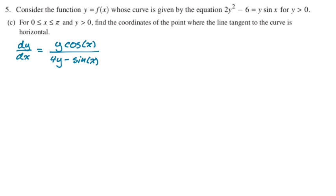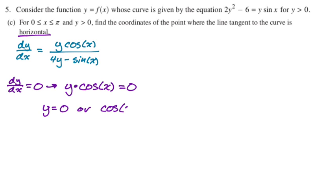For 0 to pi, inclusive, and y greater than 0, find the coordinates of the point where the line tangent to the curve is horizontal. This has historically been on the test many times. If you go back in the archives, you will find a lot of them like this. Horizontal tangent line means dy dx should be equal to 0, right? So if dy dx equals 0, that means basically the numerator of this thing must be 0. Simultaneously, the denominator should not be 0, but you've never had to worry about that on the exam.